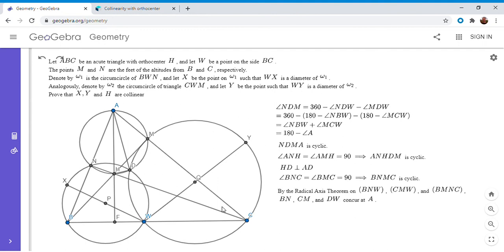The radical axis of BNW and BNMC is BN. Then CM is also one of those three radical axes. And if you take the radical axis of BNW and CMW, it's DW. So we have those three segments - BN, CM, DW - all have to concur, and therefore they concur at point A. If that's true, then A, D, and W have to be collinear.